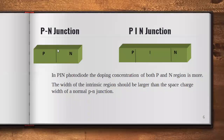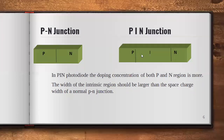Here, the doping concentration of the P and N of the PIN junction is more when compared with the doping concentration of the P and N of the PN junction. And the width of the intrinsic region should be more compared to the space charge region of the PN junction diode.